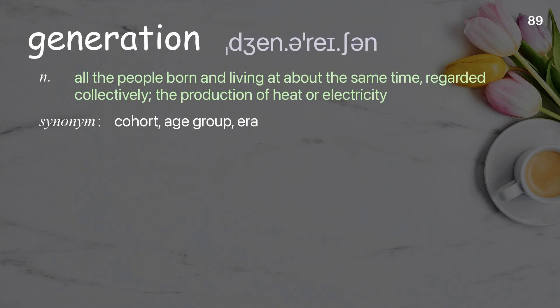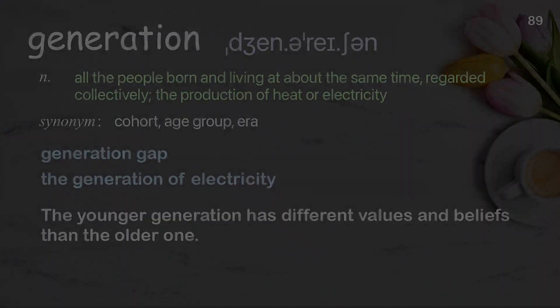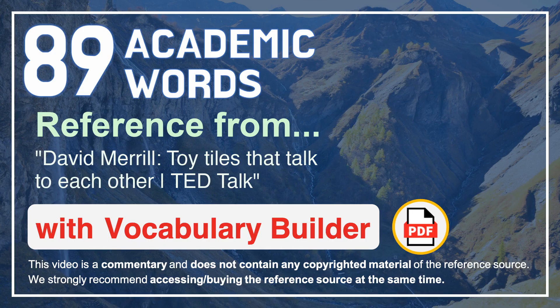Generation: all the people born and living at about the same time, regarded collectively; also the production of heat or electricity. Examples: Generation gap. The generation of electricity. The younger generation has different values and beliefs than the older one.